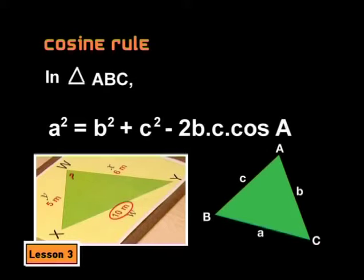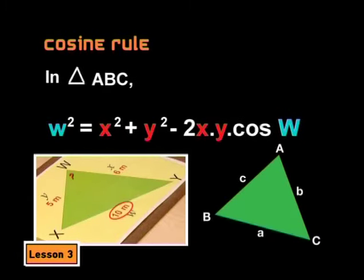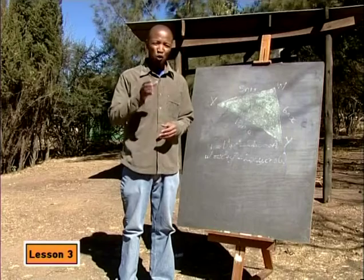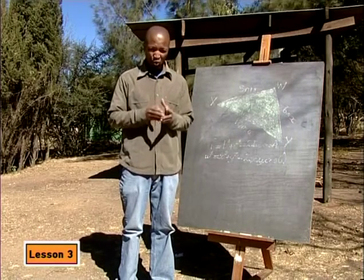Well, we want angle W. So let's change the A to a W all the way. Then B can be X and C can be Y. So we get W squared equals X squared plus Y squared minus 2XY cos W. Well done. Now you know all the sides. So you know W, X and Y in the formula.